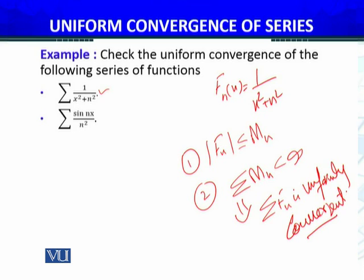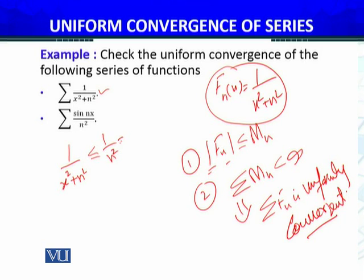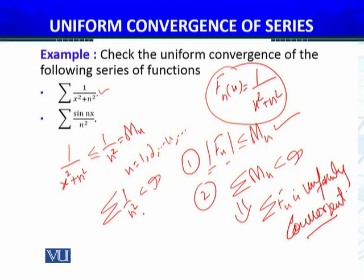For the first example, we have F_N(x) = 1/(x² + n²). Since these are squares, we don't need the absolute value. We have 1/(x² + n²) ≤ 1/n², so M_N = 1/n². We must check whether the series of 1/n² converges. This is a P-series with P = 2, which we know is convergent from Analysis 1.